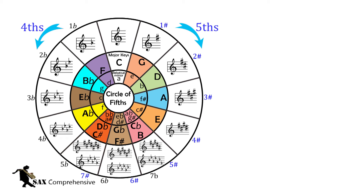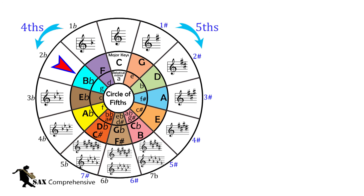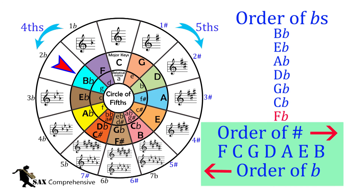We can use the circle of fifths to find out what are the flats and sharps in each key or scale. If we start on F and go clockwise, it gives the names of the sharps in order. So if the scale or key has one sharp, then it's F sharp. If the scale or key has two sharps, then it's F sharp and C sharp, and so on. If we start on B flat and move anti-clockwise, it gives us the flats in order. So if the key or scale has one flat, then it's B flat. If the scale or key has two flats, then it's B flat and E flat, and so on.